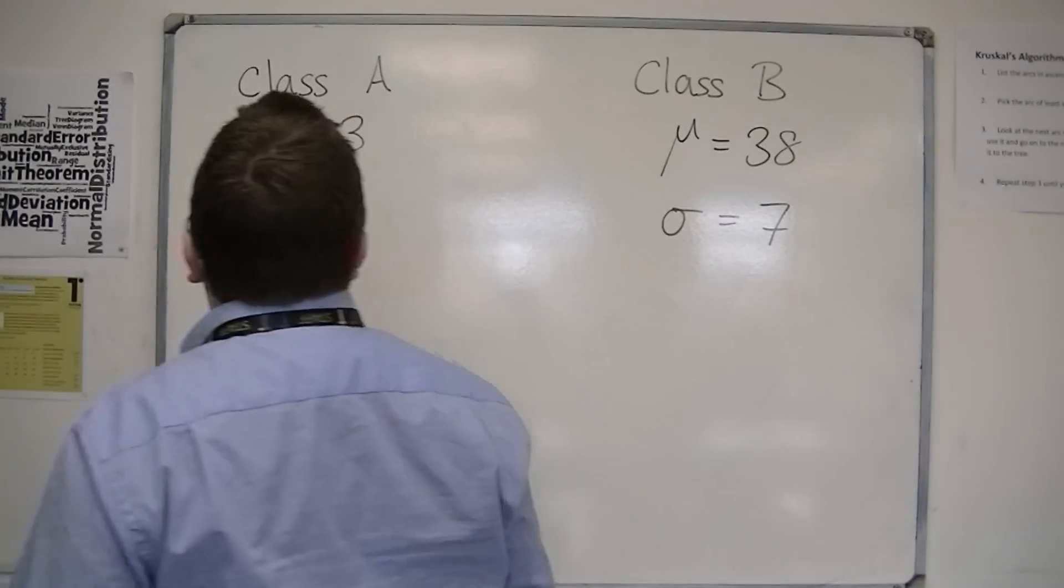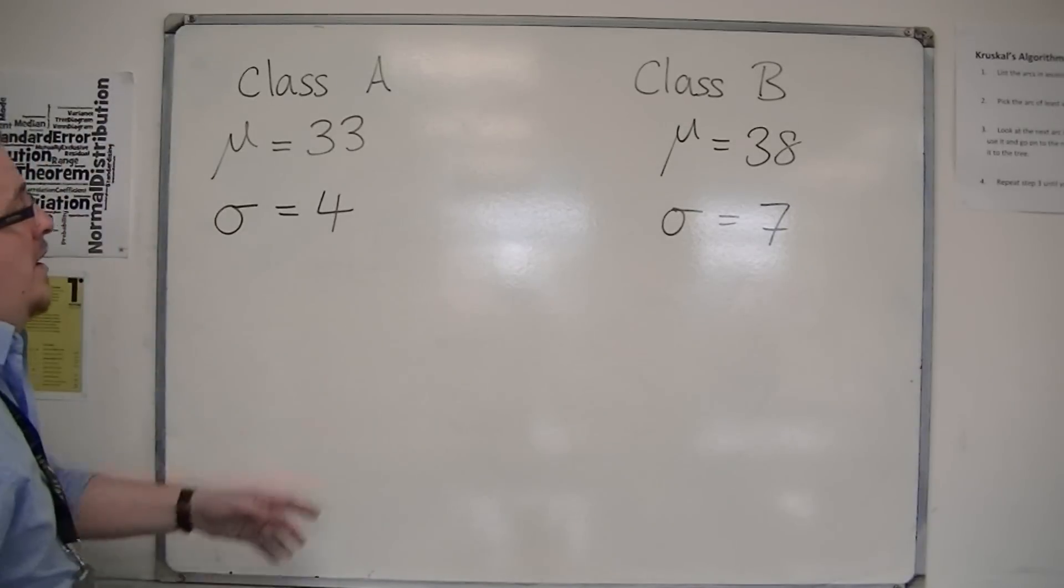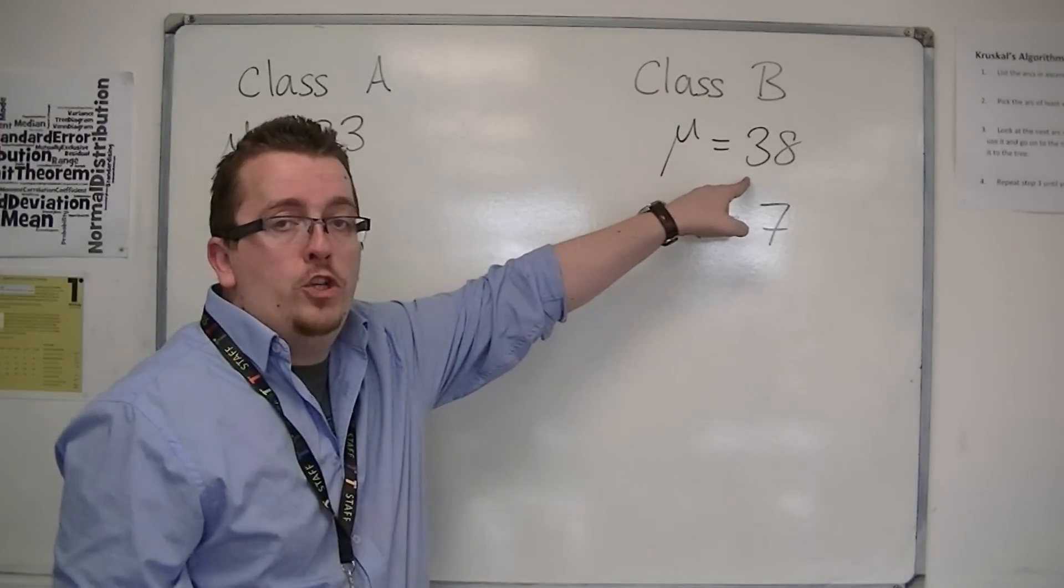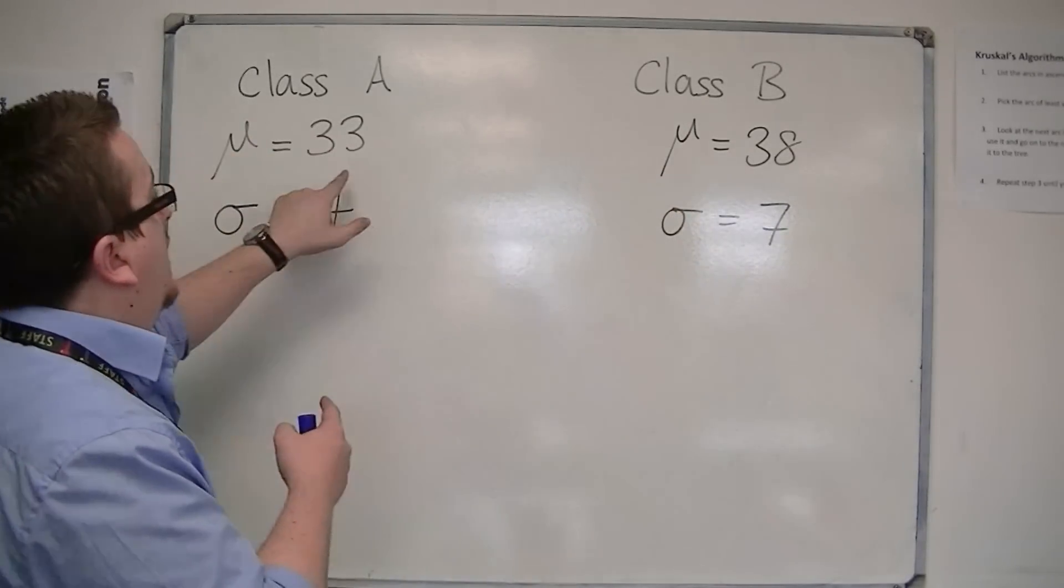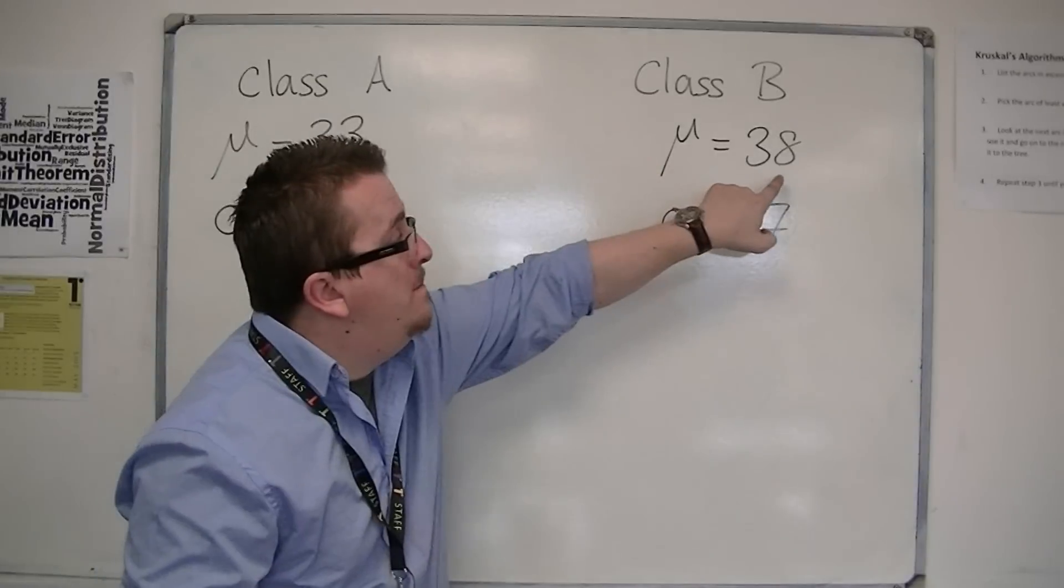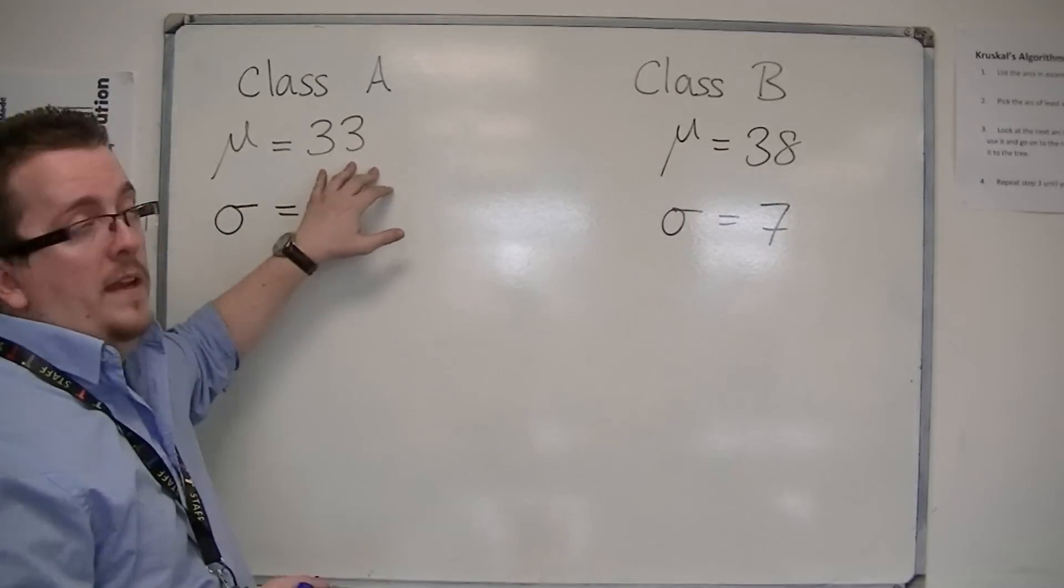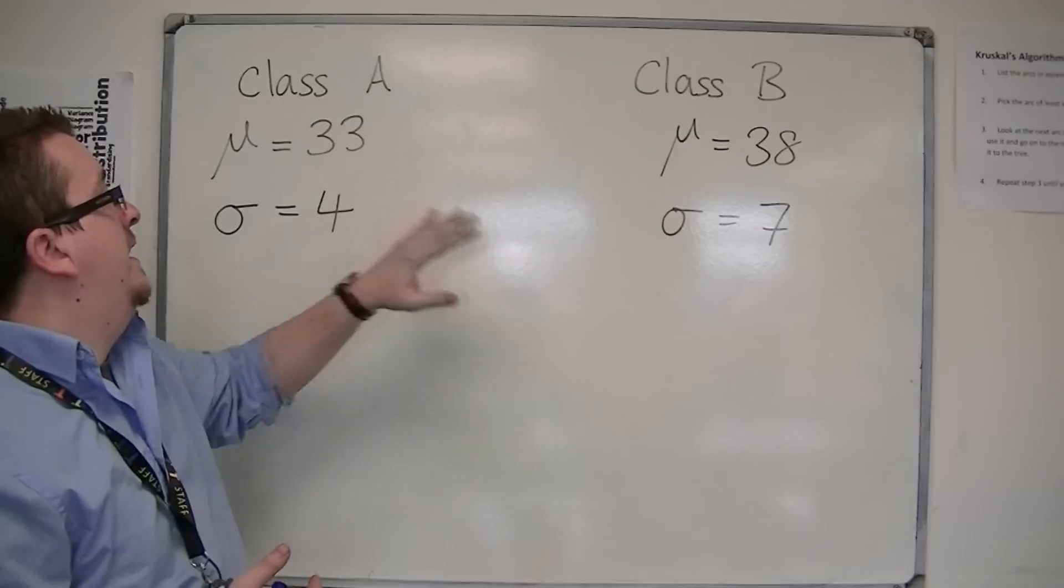One immediate comparison that you could make is that class B, on average, did better than class A because their mean is larger, 38 versus 33.